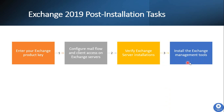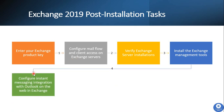Next, install the Exchange Management Tools. These tools are automatically installed when you install Exchange in unattended mode. If you install Exchange with the GUI, you need to manually select the option to install the Exchange Management Tools. You also need to configure instant messaging integration with Outlook on the Web — this involves configuring the integration between Skype for Business Server and Outlook on the Web in Exchange 2019.